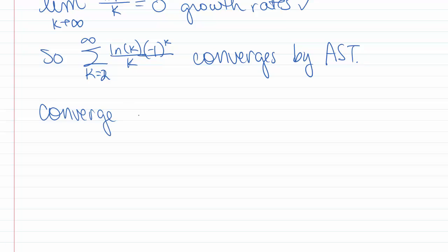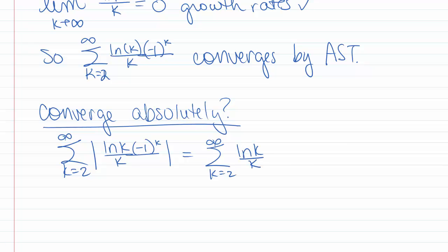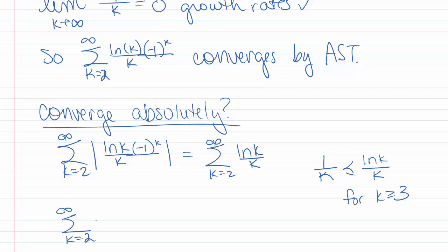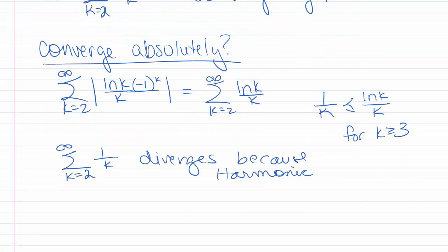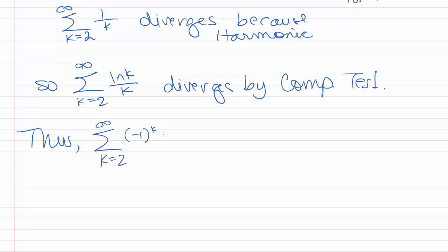But we still need to check whether it converges absolutely. We're looking at the series k goes from 2 to infinity of natural log of k over k. We want to compare that with 1 over k. We have 1/k ≤ ln(k)/k for k ≥ 3, because natural log is bigger than 1 for k ≥ 3. The sum k goes from 2 to infinity of 1 over k diverges because it's harmonic, and our series is bigger than that. So the sum k goes from 2 to infinity of natural log of k over k diverges by the comparison test. Therefore, the sum k goes from 2 to infinity of negative 1 to the k times natural log of k over k does not converge absolutely — it converges conditionally.